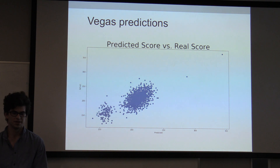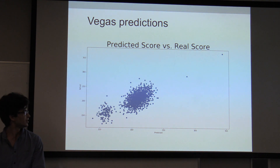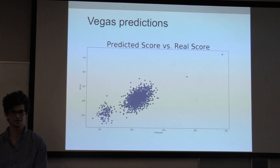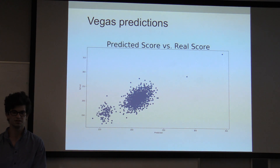I first looked at Vegas' historical lines, and as you can see there are two clusters and then a few outliers. After some investigation, I determined the bottom left cluster is pre-season games, and the two outliers are all-star games. So to have a more normalized data set, I decided to just focus on the regular season.